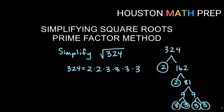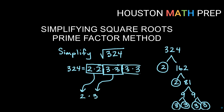I have a pair of 2s, so a 2 comes on the outside. I have a pair of 3s, so times another 3 on the outside. And I have another pair of 3s, so times another 3 on the outside. Nothing is left inside the root — everything came out as a pair. So 2 times 3 times 3 is 18, and if you check your calculator, the square root of 324 is exactly 18. Sometimes if everything comes out as a pair, you had a perfect square to begin with.